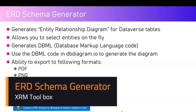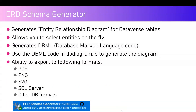In this video I'm going to talk about one of the two available XRM Toolbox toolkit tools named ERD Schema Generator. ERD Schema Generator is a tool which allows you to generate a diagram — an entity relationship diagram — for the existing Dataverse tables within your environment. Entities are related to tables, and all the tables within your Dataverse environment have some sort of relationship with other tables. For example, Contact has a relationship with Account, and Account might have a relationship with some other custom table you provision. So if you want a database diagram or entity relationship diagram, you can generate it using this XRM tool.